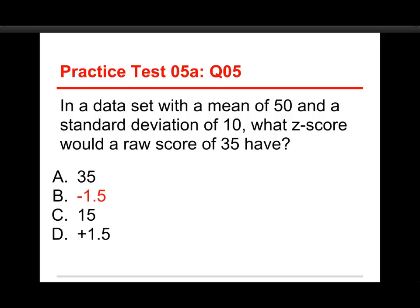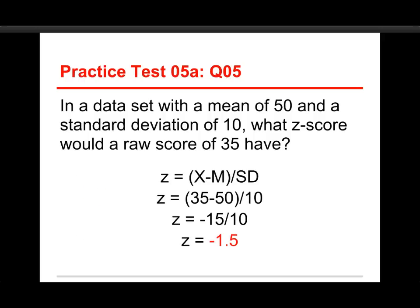Well, the answer is -1.5, and here's how you get there. The formula for a z-score is to find out the distance between the score and the mean, so that's the X minus M part, and then divide that distance, which is called the deviation score, by the standard deviation.